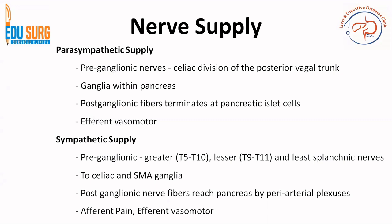Sympathetic afferent is T10 and efferent is vasomotor. As we all know, the sympathetic system has long post-ganglionic nerve fibers, so the ganglia don't form within the organ, whereas the parasympathetic has short post-ganglionic fibers and therefore the ganglia are within the organ.